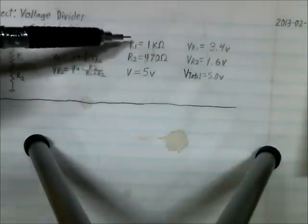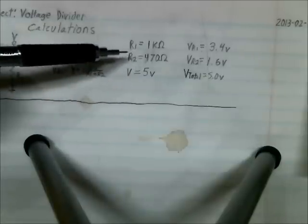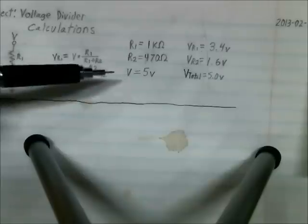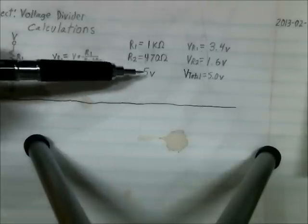So R1 is equal to 1 kilo ohm, or 1,000 ohms, and R2 is equal to 470 ohms. And V, or the voltage, is equal to 5 volts.